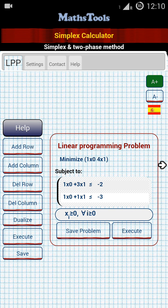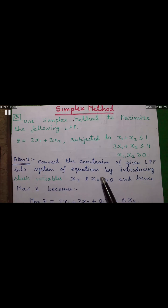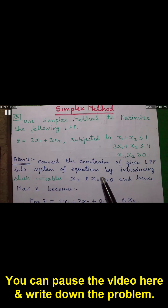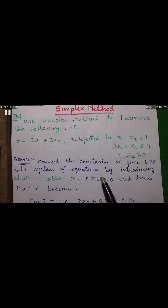Let me take you to a problem which we will solve. Use Simplex method to maximize the following LPP — LPP stands for linear programming problem. Z equals 2x1 plus 3x2. This is our objective function, subjected to: x1 plus x2 less than or equals to 1, and 3x1 plus x2 less than or equals to 4, where x1 and x2 are both greater than or equals to 0.